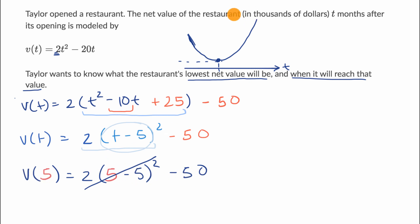T represents months. We rewrote our function in vertex form so it's easy to pick out this value. We see that this low point happens at t = 5, which is 5 months. And what is that lowest net value? It's -50, and the function gives us the net value in thousands of dollars.